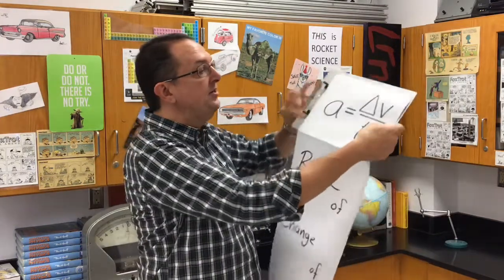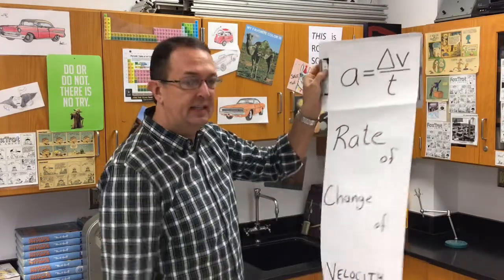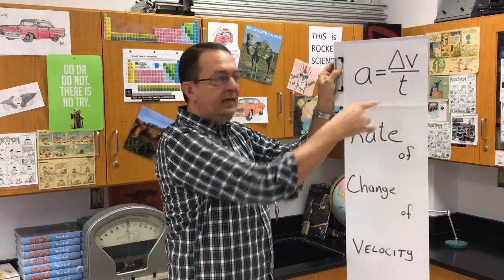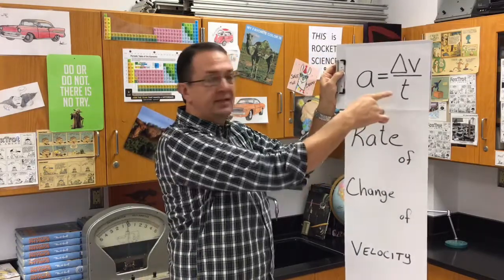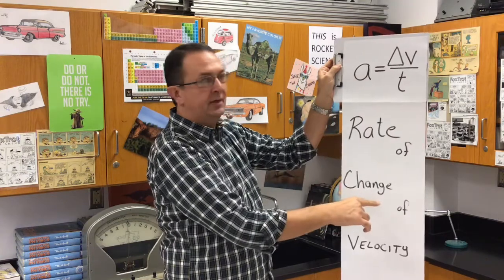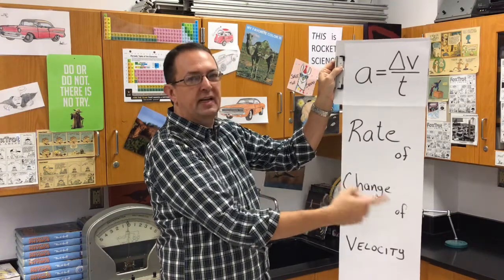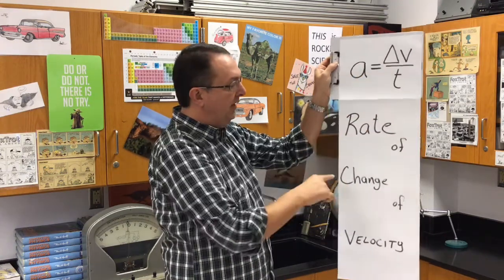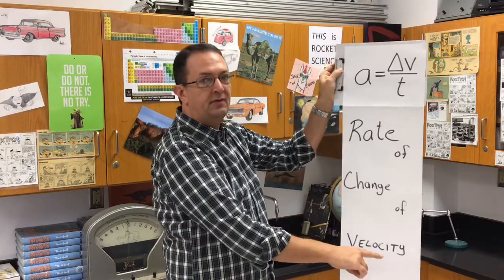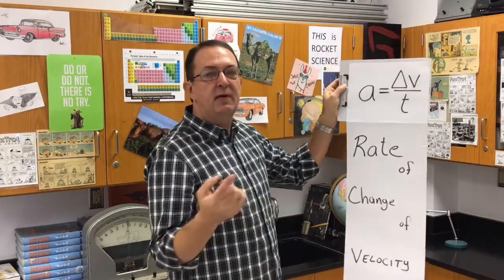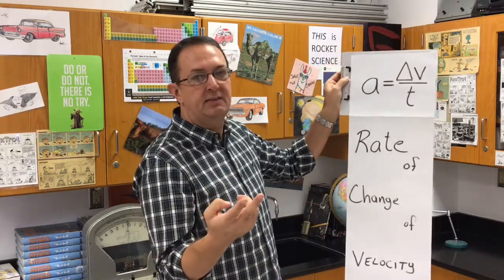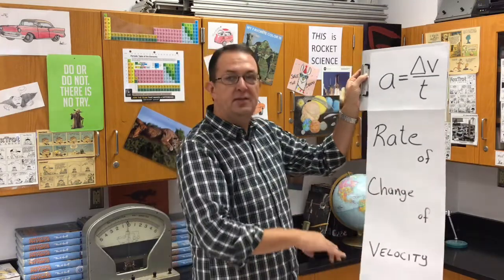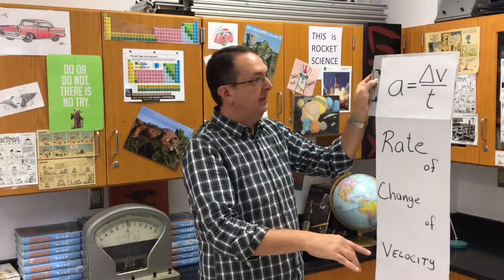Here is the equation that is directly linked to it. The rate means divided by time — it's the time rate of change of velocity. The delta is there for the change in velocity. It's not the rate of change of speed, it's not the change of speed. It's the time rate of change of velocity.